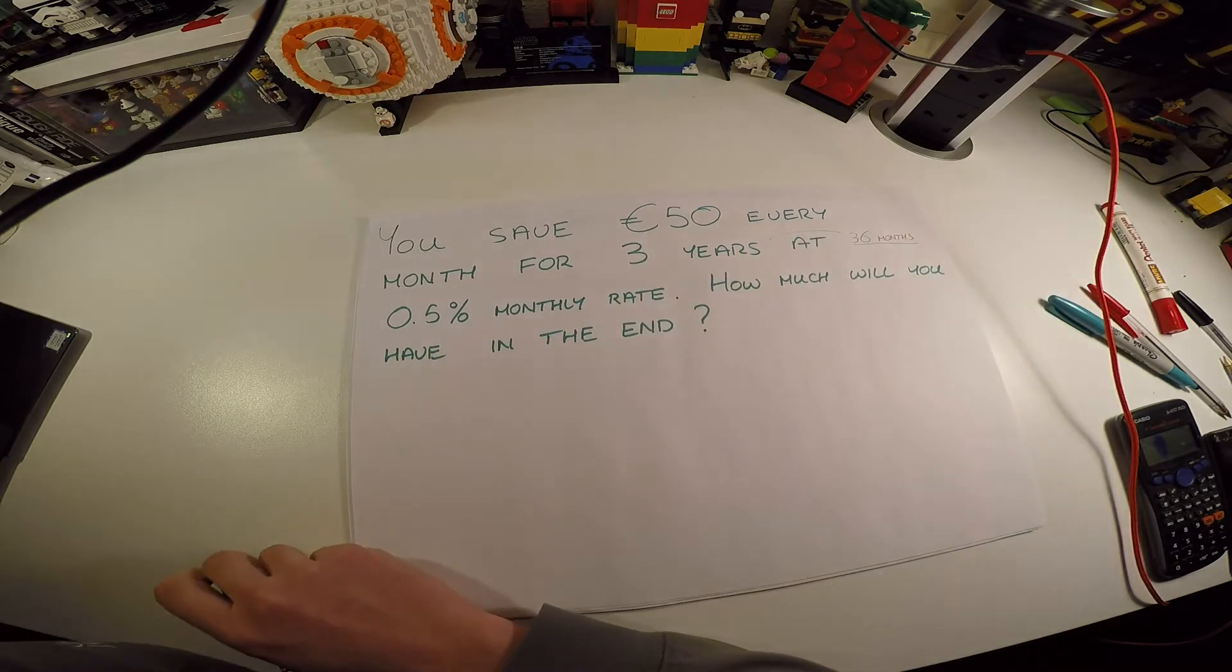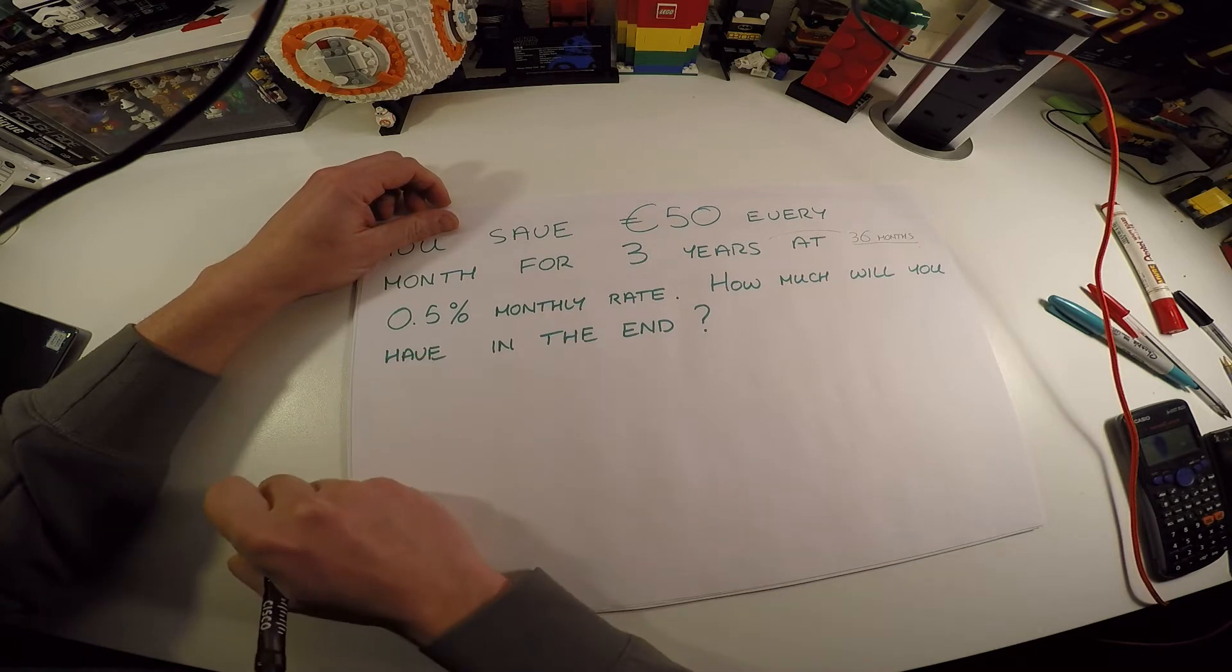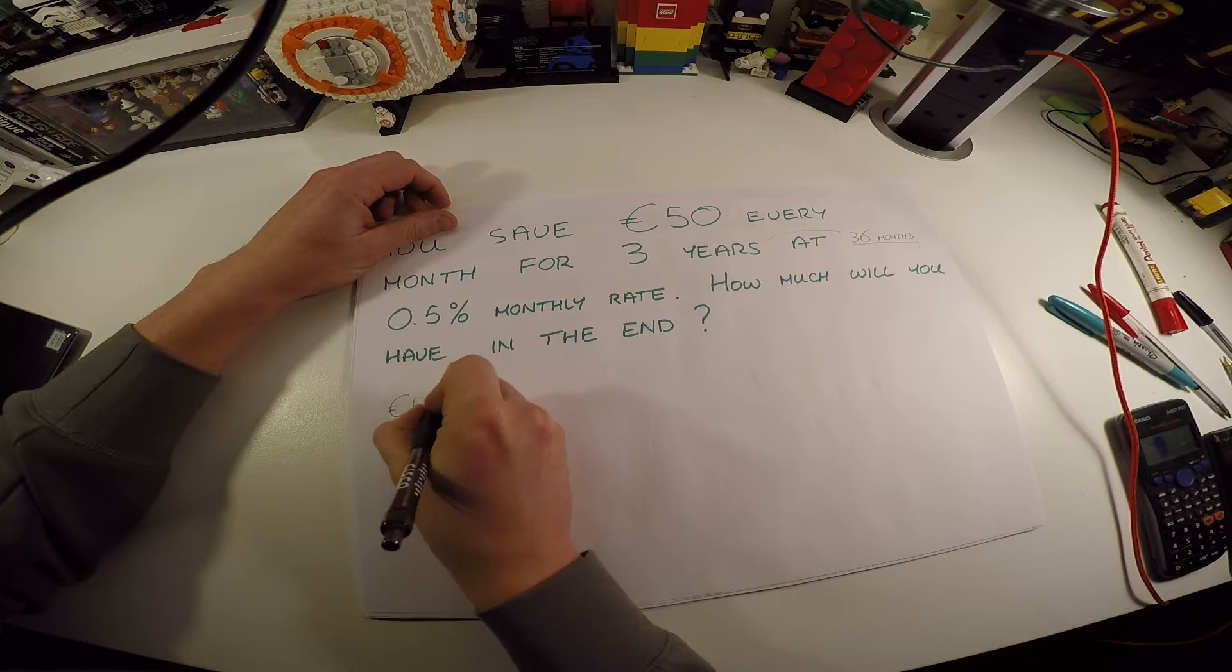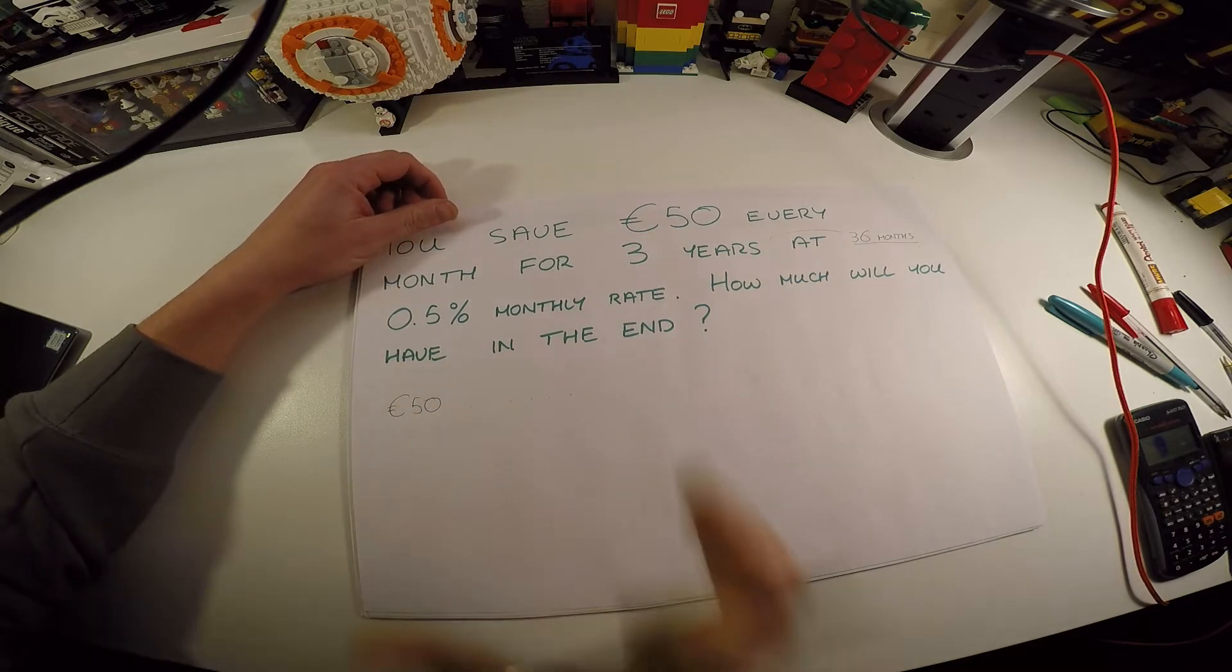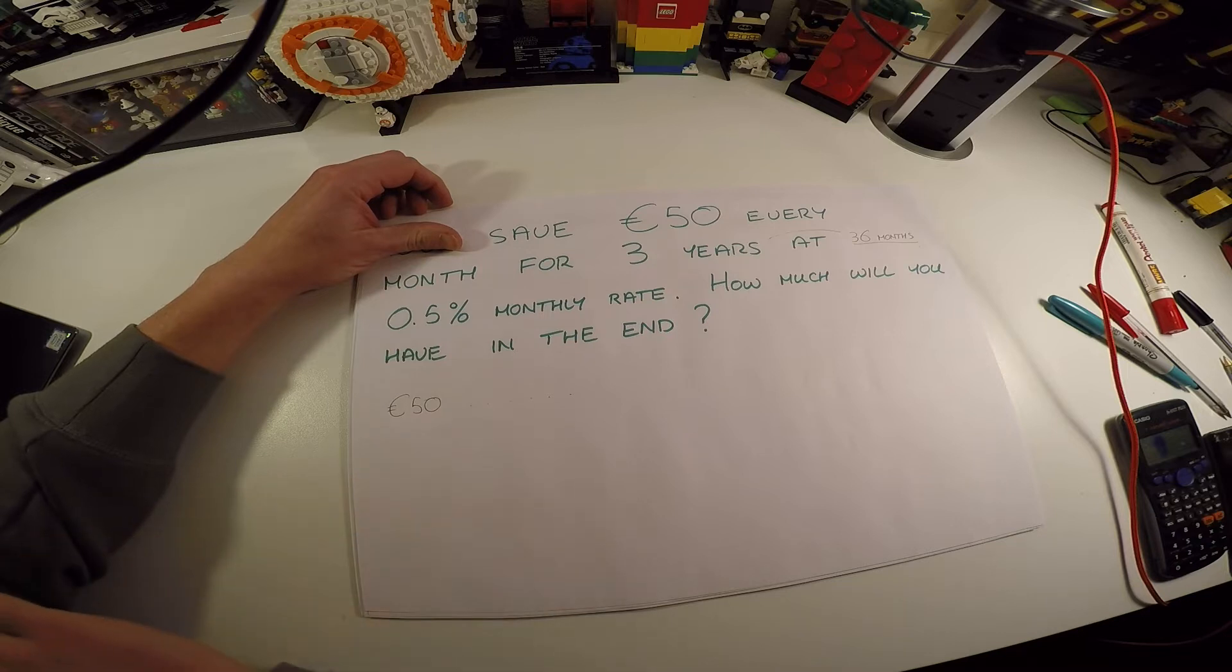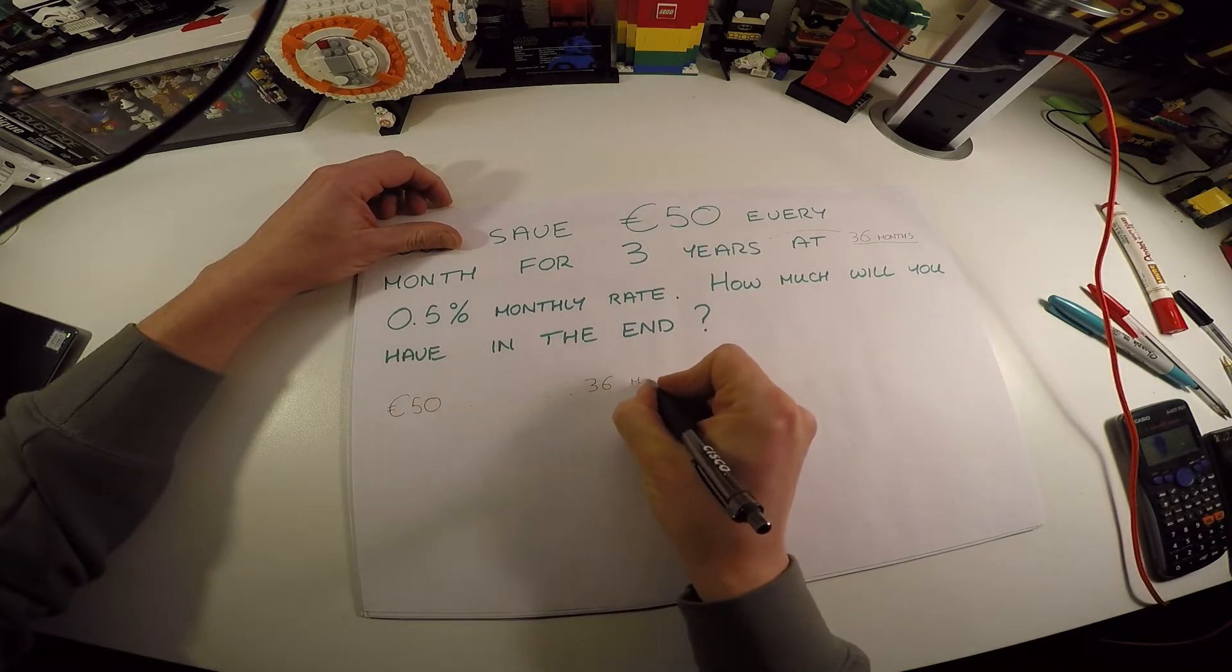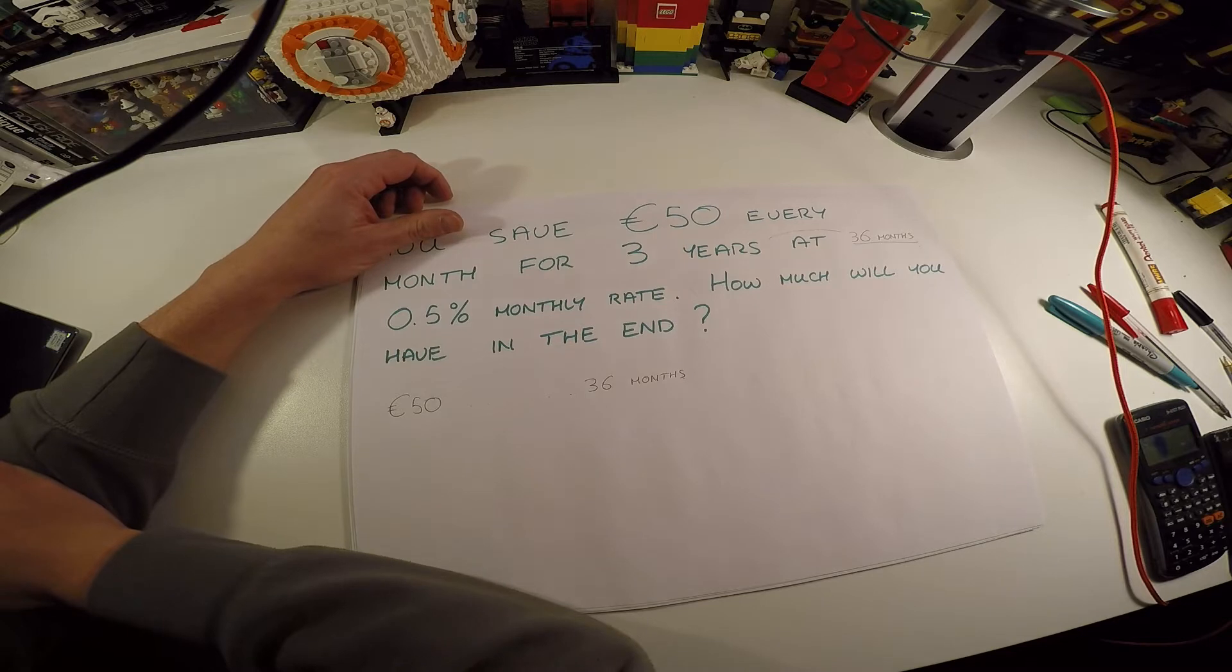Now what's going to actually happen here and where does the geometric series come in? Well, you start off and you put in your first amount of money, which is 50 euros. It earns interest the whole way because it's the very first packet of money put in there. That's going to be in there for the whole 36 months.